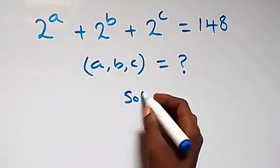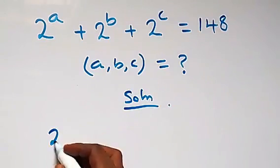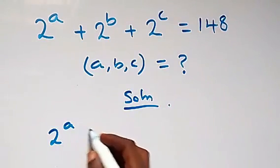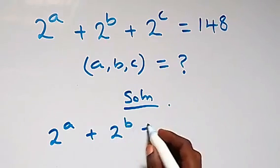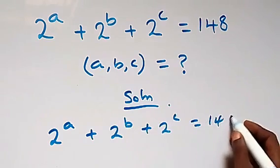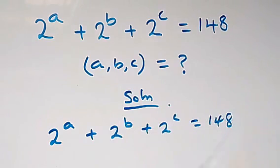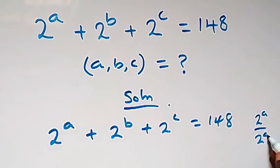Here, from what we have, which is 2 raised to power a plus 2 raised to power b plus 2 raised to power c equals to 148, we can multiply and divide by 2 raised to power a, because 2 raised to power a divided by 2 raised to power a is equal to 1.